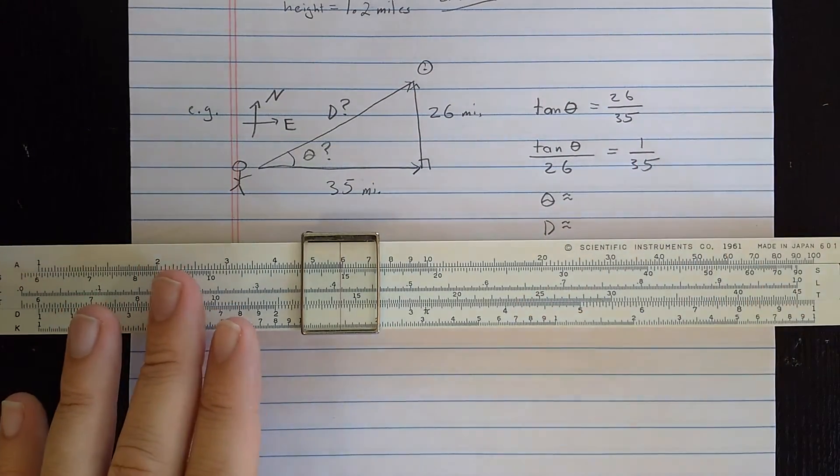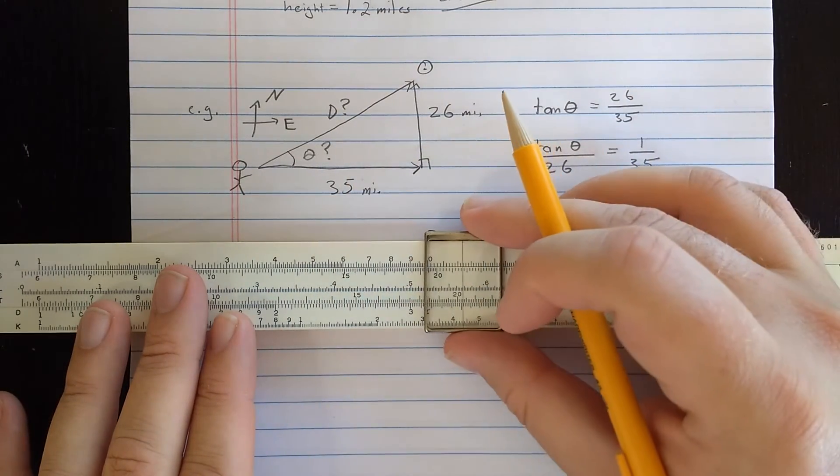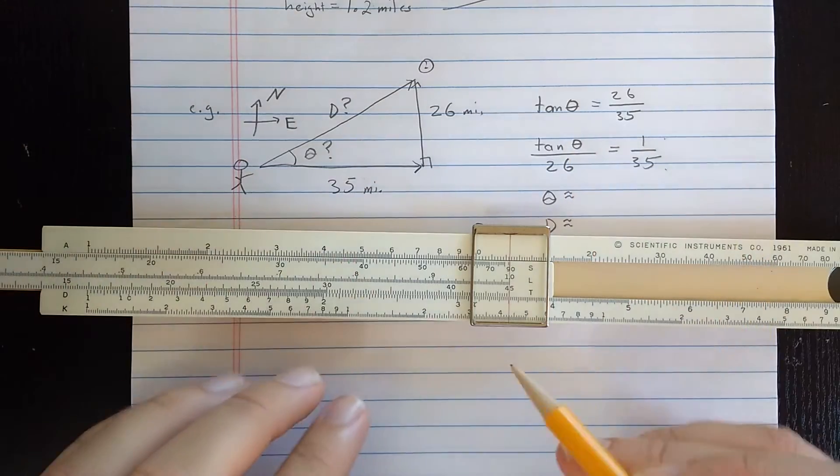So to find theta, I know that tangent of theta should be 26 over 35, opposite over adjacent, but I'm going to solve like this. I'm going to move the 26 down here, so that what I can do is set 35 on the D scale underneath the index, 1. Now we're using the T scale, but tangent of 45 is also 1. So I've set that there.